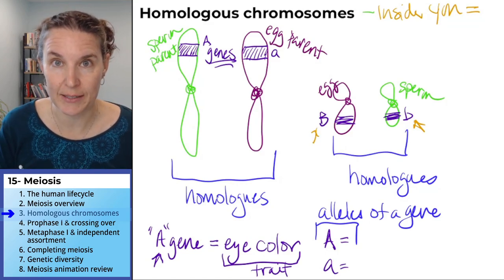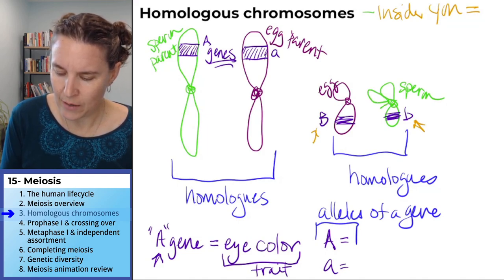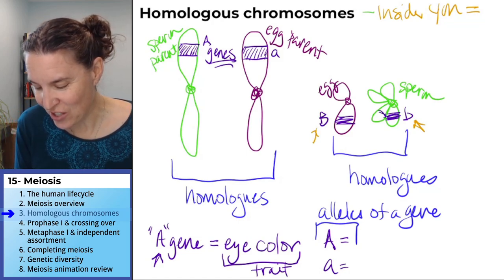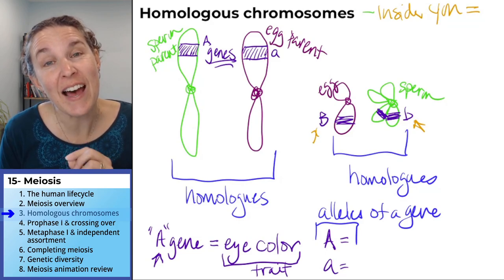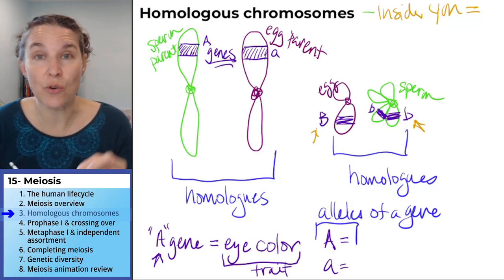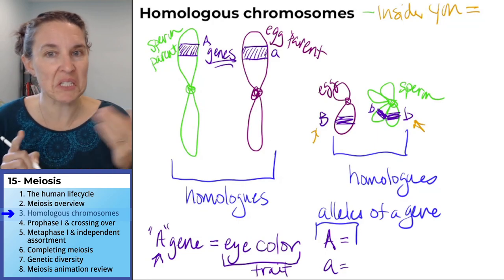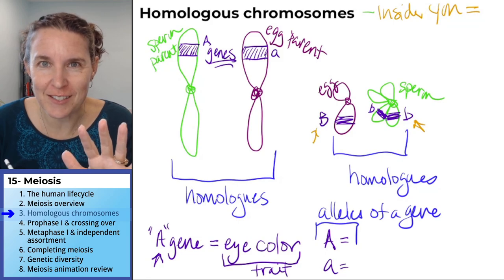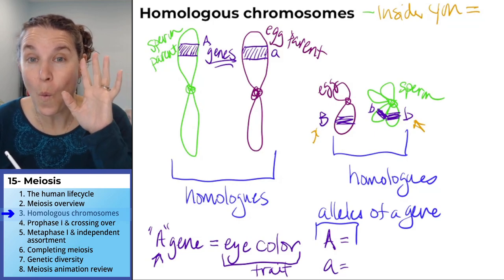What do sister chromatids look like if we add a sister into the mix? It's easy — sisters are identical. Sisters have the same genes and identical alleles. That means your sister chromatids are identical to each other. Homologous chromosomes have the same genes, but different alleles.